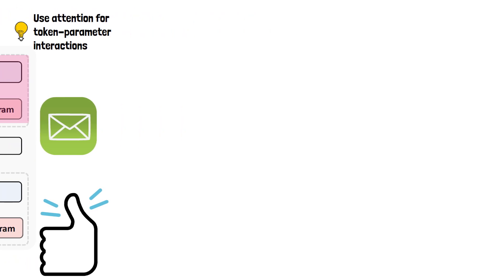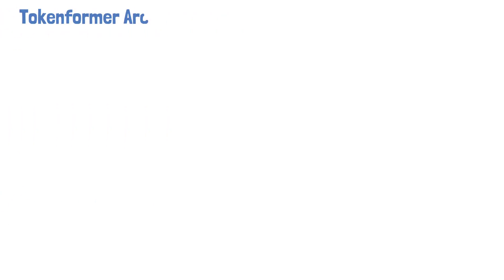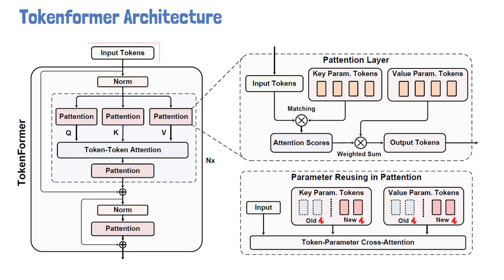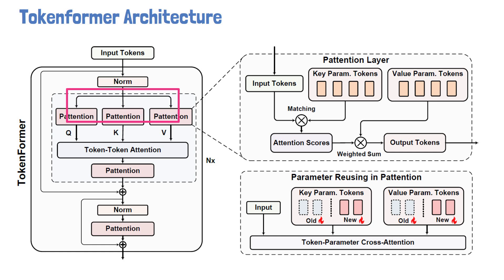Let's now zoom in on the Tokenformer architecture by reviewing a figure from the paper. At the top we have the input tokens. After normalization, the input tokens are passed to three Pretension blocks — Pretension being the name for the token-parameter attention block. Each of the three Pretension blocks has its own weights and is in charge of creating the inputs for the self-attention block: the Q, K, and V matrices, one per each Pretension block.